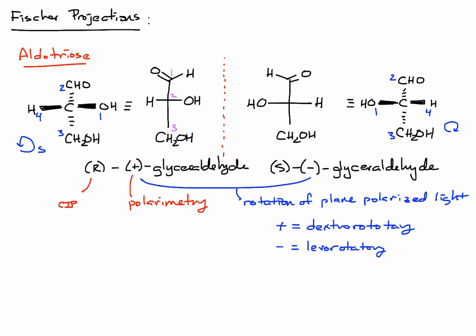And finally, one last important thing to point out about sugars in general. We're going to use the terms D and L. So in the penultimate carbon bearing the hydroxyl group, so in this case C2, if this OH group is to the right on a Fischer projection, this is given the designation D. And the penultimate carbon on the enantiomer is to the left, this is given the designation L.